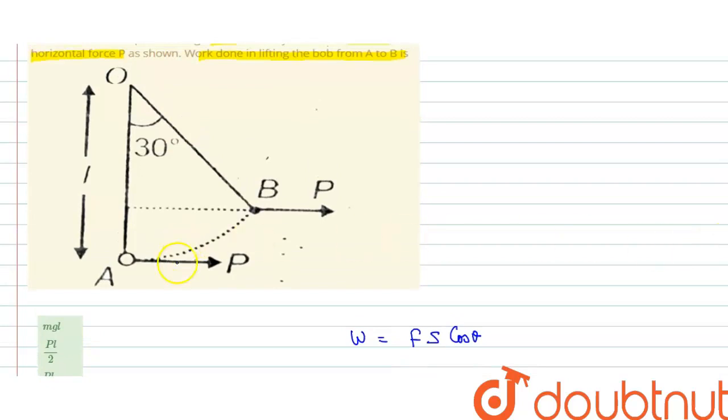So as you can see, when this bob is pulled from A to B, horizontal displacement of this bob is, this is L and this is 30 degrees, so this will be equals to L sin 30 degrees. L sin 30 degrees means L into sin 30 equals 1 by 2, so you can say displacement is equals to L upon 2.